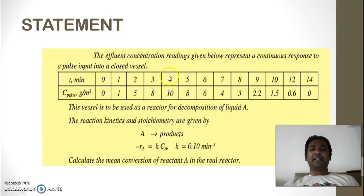Here you can see this is the time slot given: 0 minute, 1 minute, 2 minute, 3 minute, up to 10 minute, then up to 12 and 14. So here the interval is 1 minute and here after 2 minutes. And these are the corresponding concentration, effluent concentration at the end of the reactor or at the outlet of the reactor.